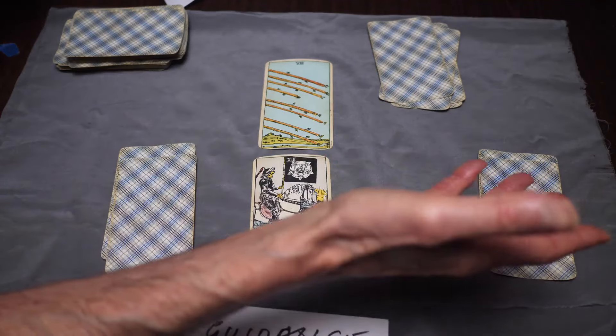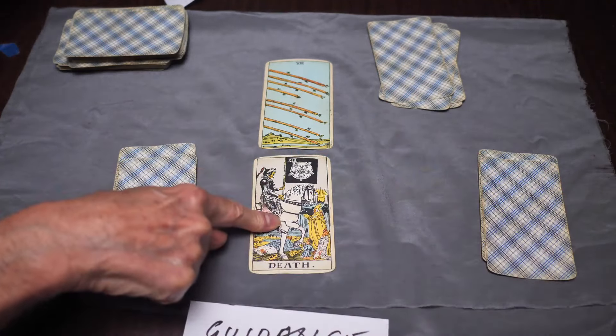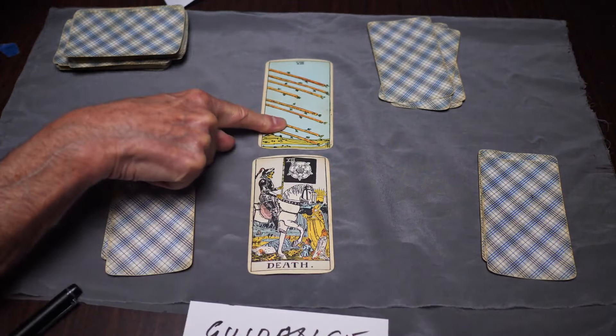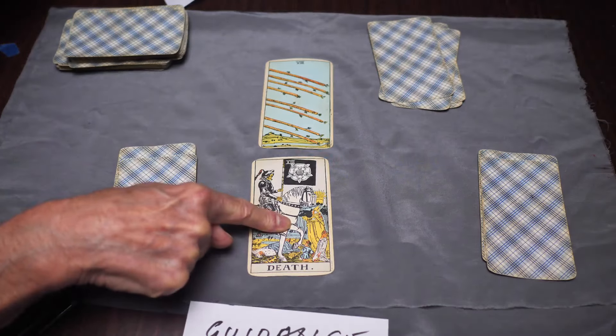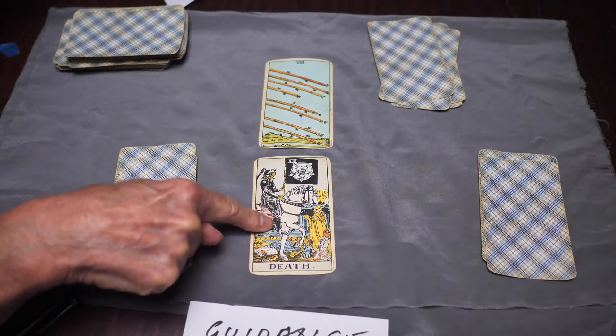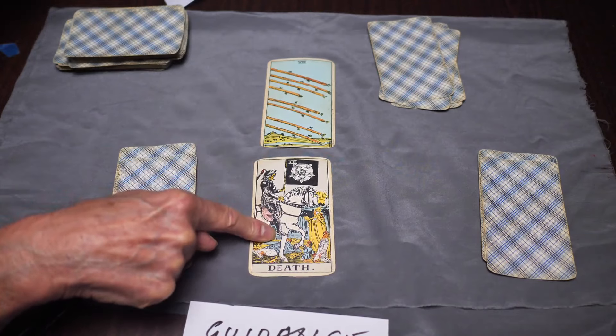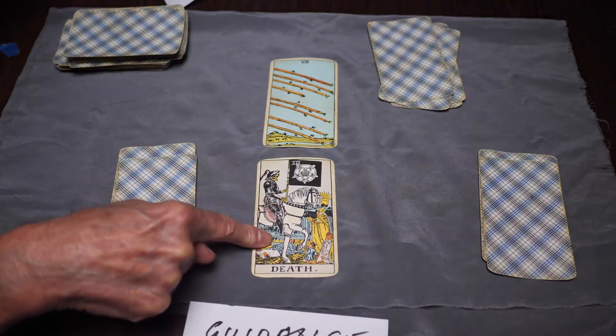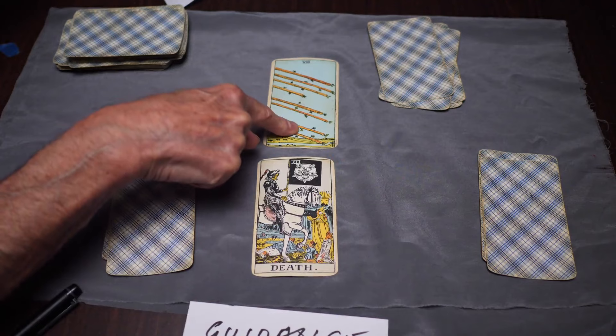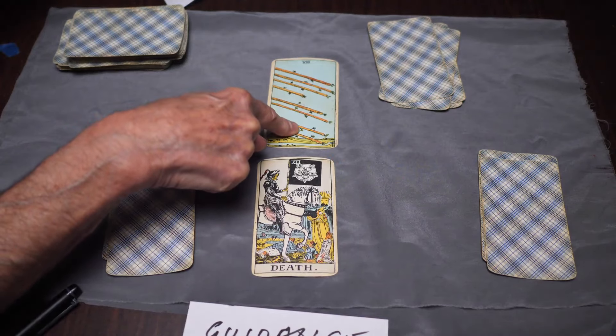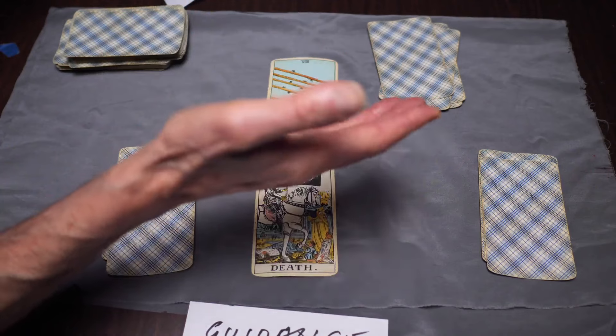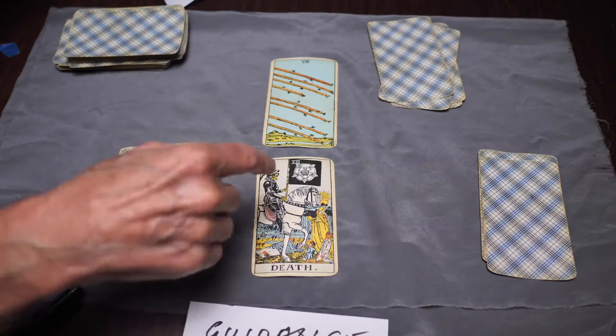If there are obstacles, how do you move on? If the Death card happens to come up in the reading, you know what to do with the Death card because you've got the idea of obstacles. Go for a new start. Death is endings and beginnings. Figure out what's no longer valuable or useful and do something new. That's what the Death card means. It's an obstacle, so do something about it.